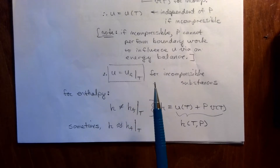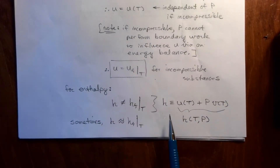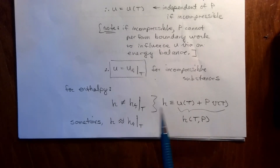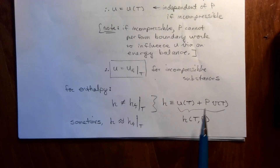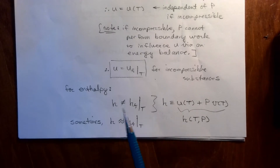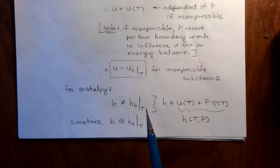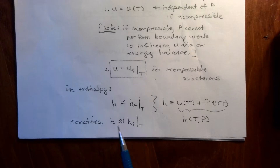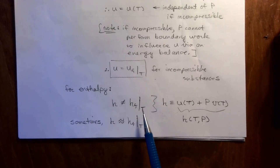For enthalpy it's a little different. Enthalpy is defined as U plus PV, and so there is a pressure dependence here. H is still a function of T and P, so it doesn't make sense to say that H equals HF at the temperature — it's also going to be dependent on P. Sometimes the pressure influence is so small that H is approximately HF at the temperature, but in general H is not equal to HF at that temperature.